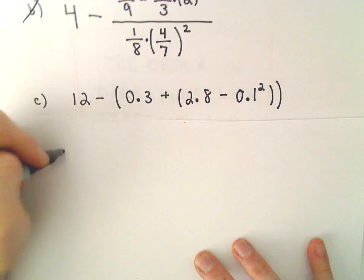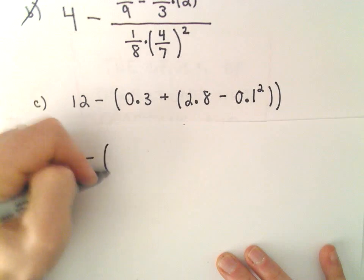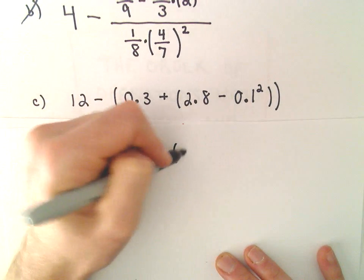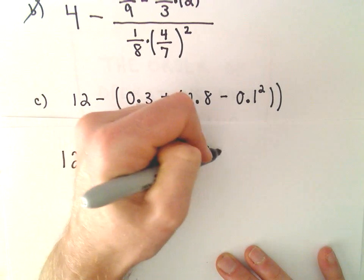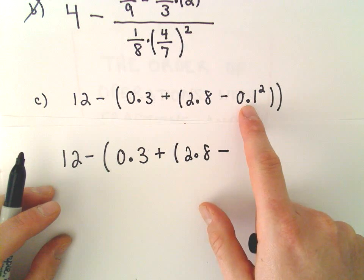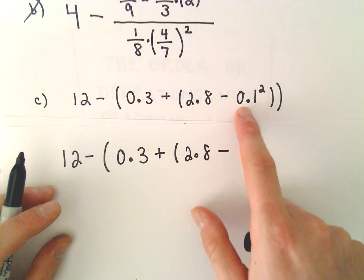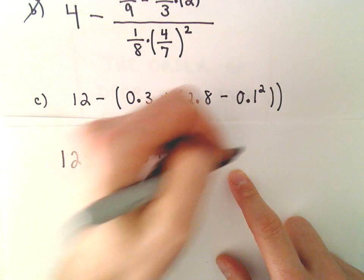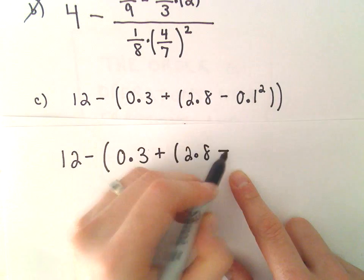So we've got 12 minus this quantity 0.3 plus the quantity 2.8. I'm going to rewrite this just to emphasize the number that's being squared is not negative 0.1 squared. The number that's being squared - I don't know if this will be too many parentheses - so there's my minus sign.